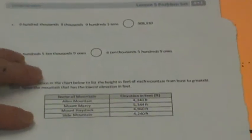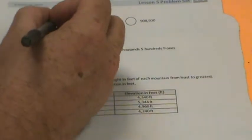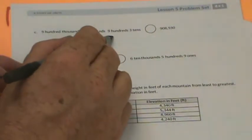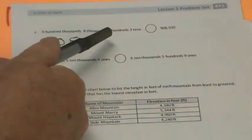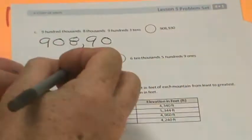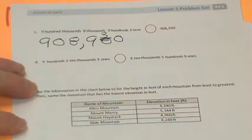Turn the page over. 900,000s, we're doing in unit form now. 900,000s, 8,000s, 900s, 3 tens. So 900,000s, no 10,000s, 8,000s, comma, 900s, 0 tens, excuse me, 3 tens, and 0 ones.